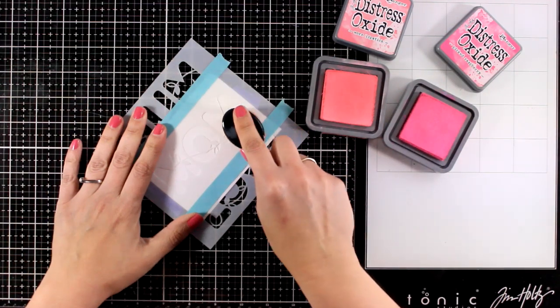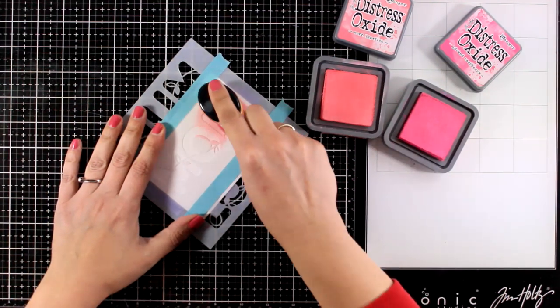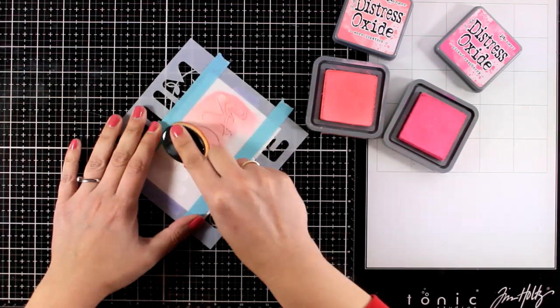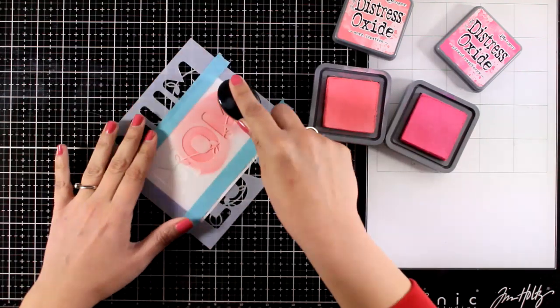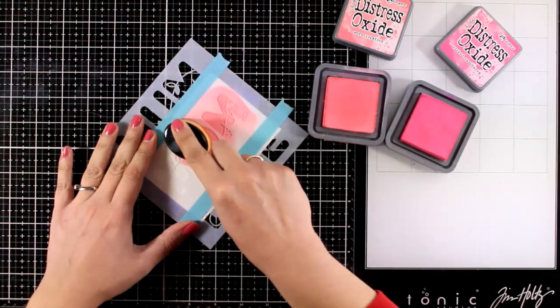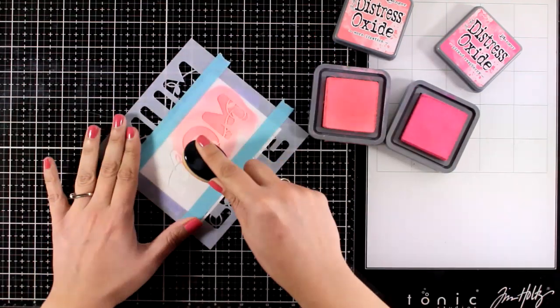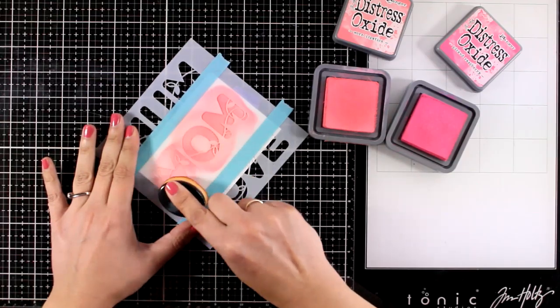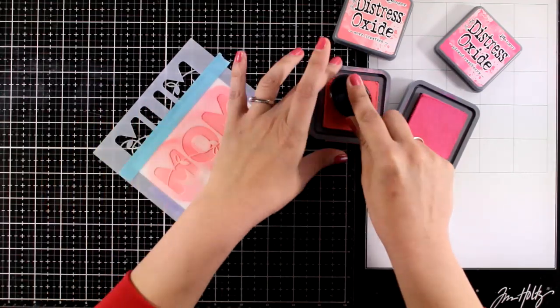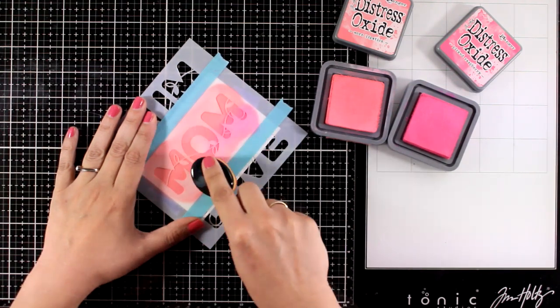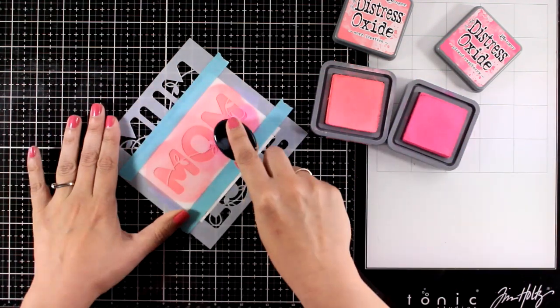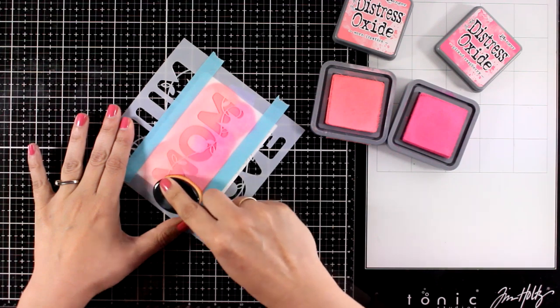I'm using two Distress Oxide ink colors for an ombre look. First, I'm applying my lighter color, which is Worn Lipstick. I'm using my blending brushes, and just because they're so soft, they don't go underneath the stencil. Then I'll add Picked Raspberry only at the bottom of the letters. Of course, you can have the contrast even more.